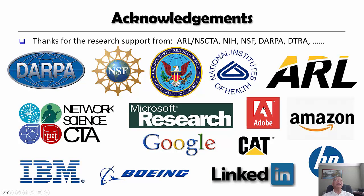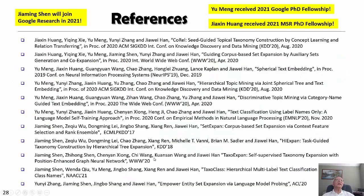Our work has been funded by federal agencies and industry. The research papers covered in this talk are listed here. One PhD student who spearheaded this effort, Jiaming Shen, will join Google Research. Yiming received a 2021 Google PhD Fellowship, and Jiaxin, another first author, received a 2021 Microsoft Research PhD Fellowship. Along this line, there are lots of things that can be done, and it can be very fruitful. Thank you.